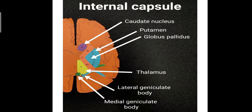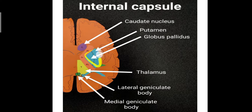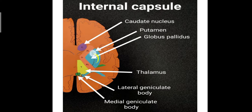You can see the structures here. This is the caudate nucleus. Then you can see this blue-colored triangular wedge-shaped area, which is the lentiform nucleus, composed of two parts: the outer putamen and the inner globus pallidus. The yellow-colored part is the thalamus, and you can also see the medial geniculate body and the lateral geniculate body. These are the structures which come in relation with the internal capsule.